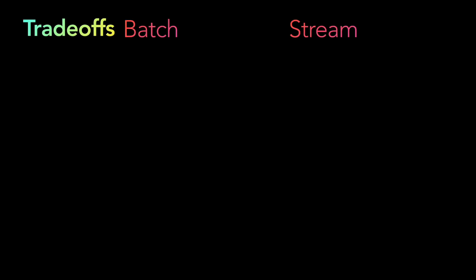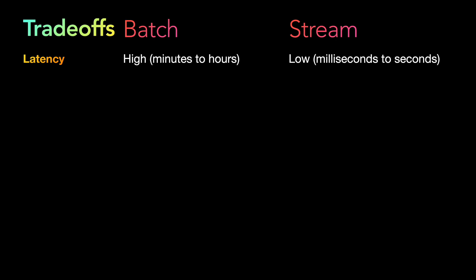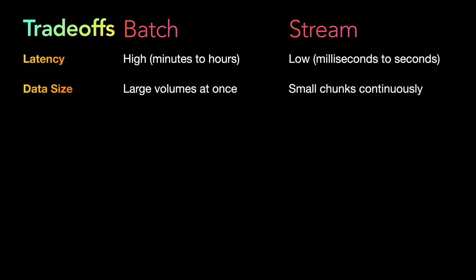Now let's look at the trade-offs between batch and stream processing. Starting with latency — in batch, the latency is high, but in stream processing, the latency is low. Batch processing is suitable for non-time-sensitive applications, while stream processing provides immediate insights and supports real-time decision making wherever those scenarios apply.